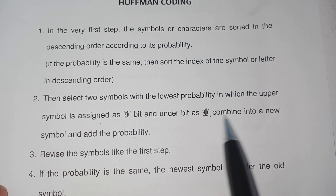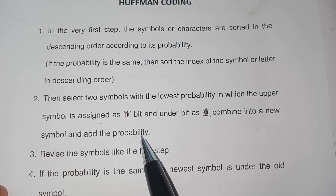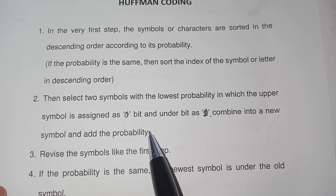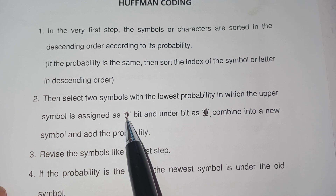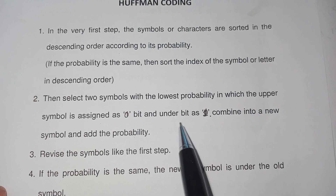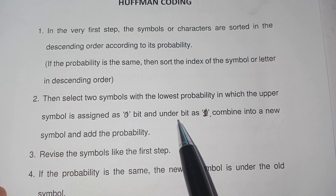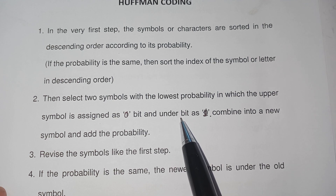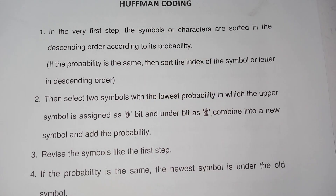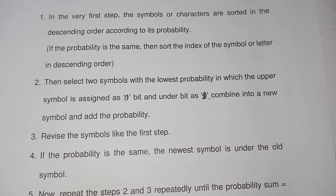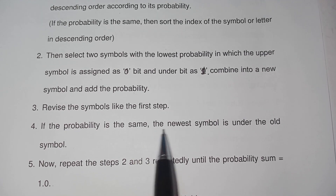Combine the two least-probability symbols into a new symbol by adding their probabilities. Then rearrange the new set in descending order, just as in the first step. Step four: if the probability is the same, the newest symbol is placed above the old symbol.